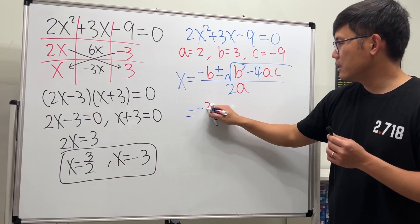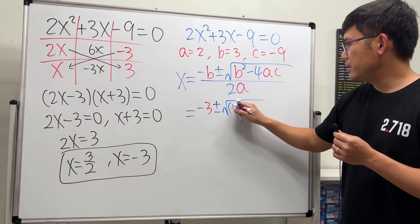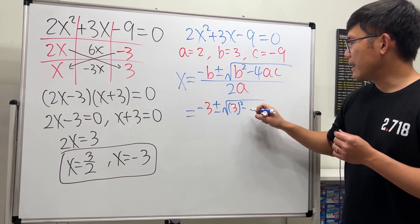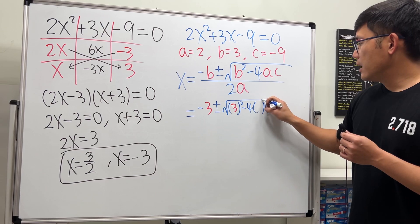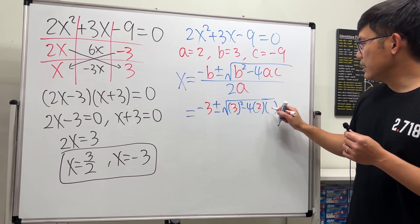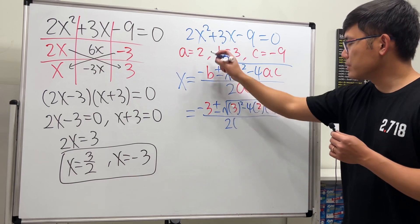Continue throwing numbers, so we have negative b is 3, plus minus square root—b is 3, so we have 3 squared minus 4 times a times c. a is 2, and then c is negative 9, all divided by 2 times a, which is 2 times 2.